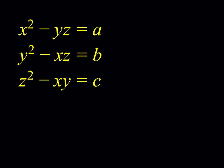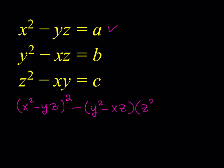There are three equations. I'd like to start with the first one. I want to take the first equation and square it. Then from the square of the first equation, I'm going to subtract the second equation times the third equation.